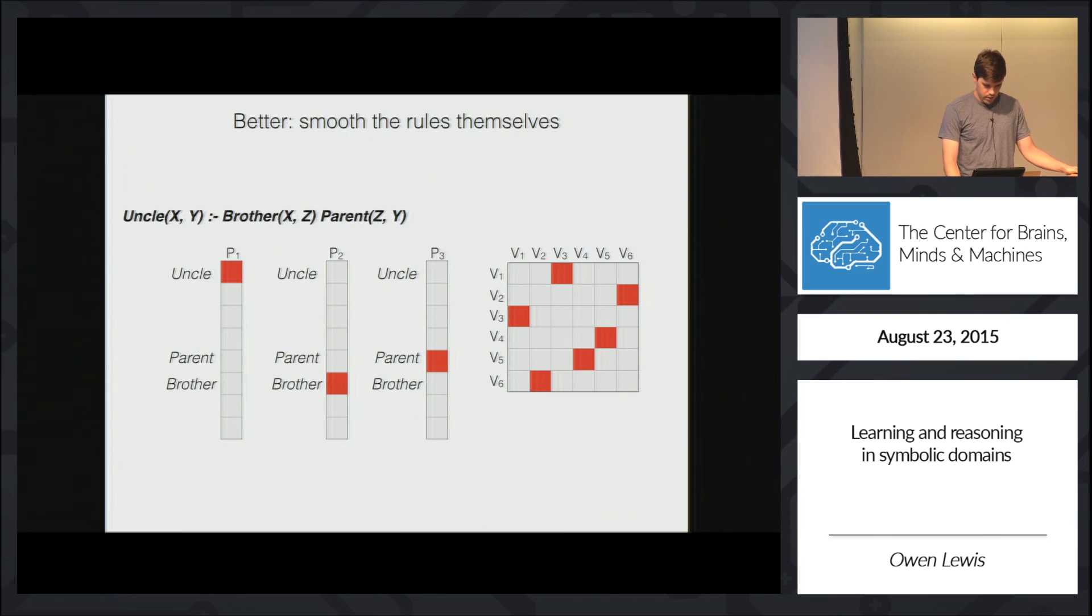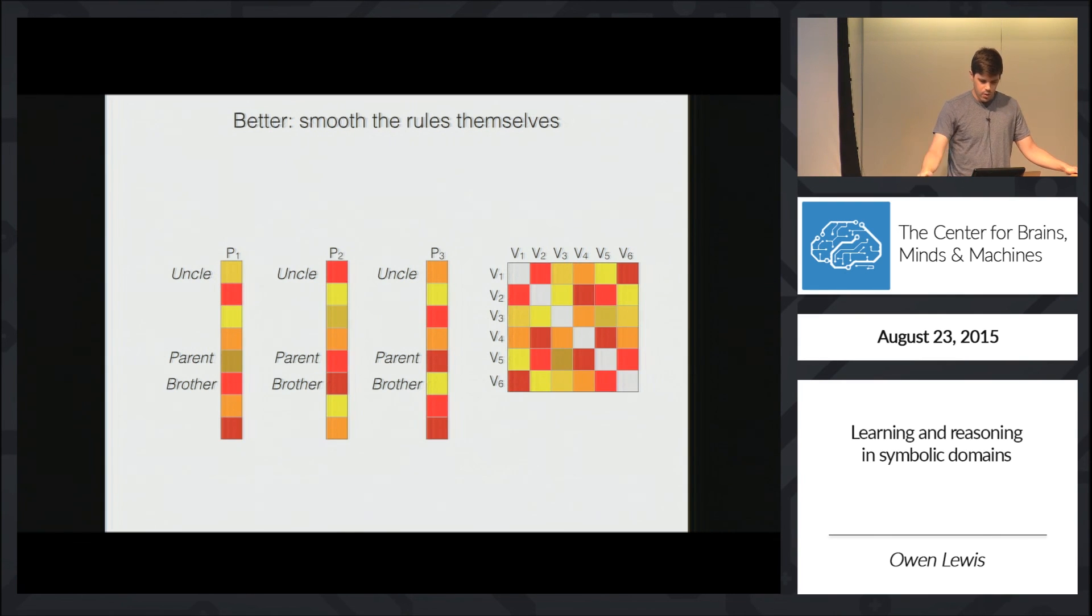So when we have a representation set up in this way, we can relax the binary assumption and replace all of these ones and zeros with real values. And I'm not going to show how, but you can show that when you've relaxed this way, each of these parameters you can differentiate and learn as you'd like to.